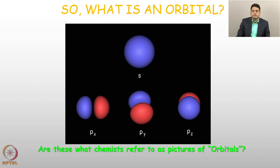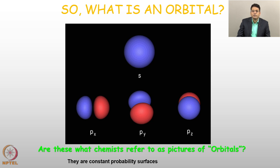We have shown that orbitals are mathematical wave functions. If you look in a chemistry textbook, this is what you will see as orbitals. The question is: what is an orbital? The precise definition is that it is a one-electron wave function — nothing more than that. But the pictures given are not actually orbitals; these are constant probability surfaces. These surfaces denote the probability of finding the electron up to a certain value. Many textbooks define an orbital as the space where the probability of finding the electron is maximum — that is not a correct definition — but it is consistent with the picture because these are constant probability surfaces.